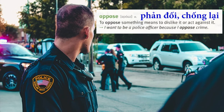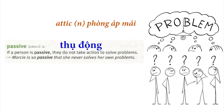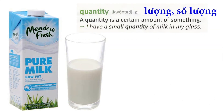Oppose: To oppose something means to dislike it or act against it. I want to be a police officer because I oppose crime. Passive: If a person is passive, they do not take action to solve problems. Marcy is so passive that she never solves her own problems. Quantity: A quantity is a certain amount of something. I have a small quantity of milk in my glass.